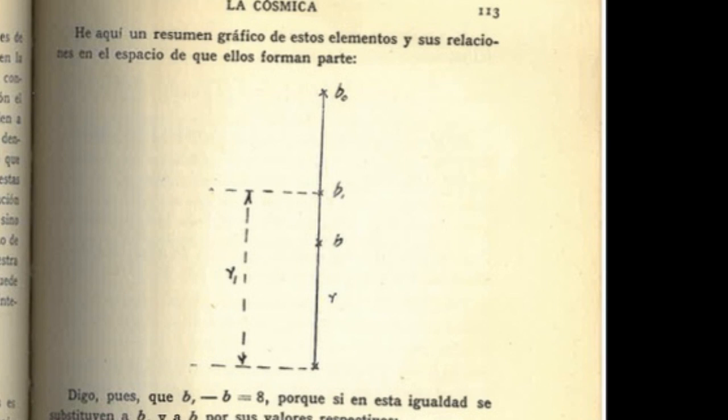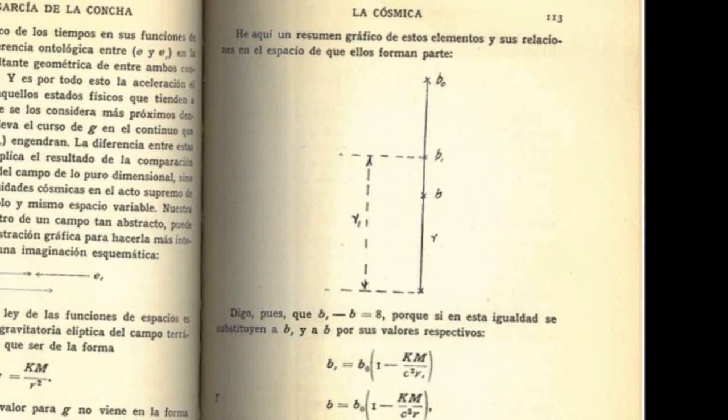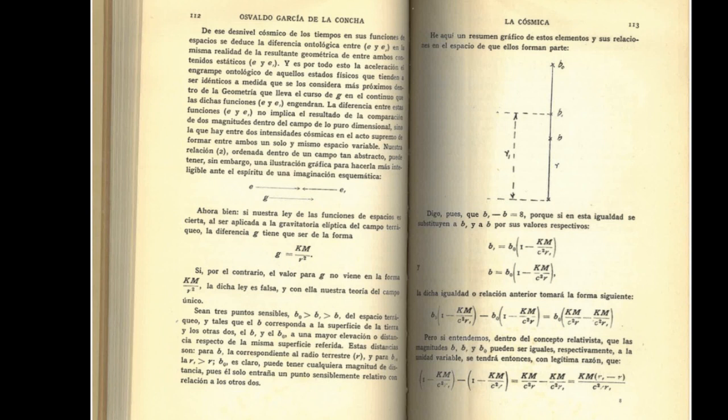I see that, I say, then B comma negative B equals A because if this equality B subscript one and B are replaced by their respective values the set equality or previous relationship will take the following form.